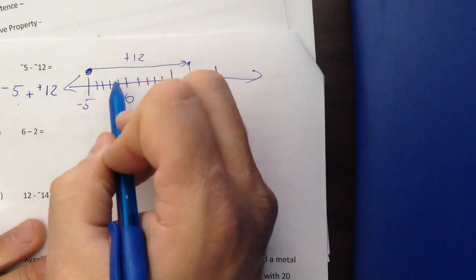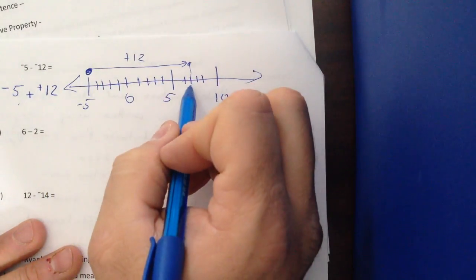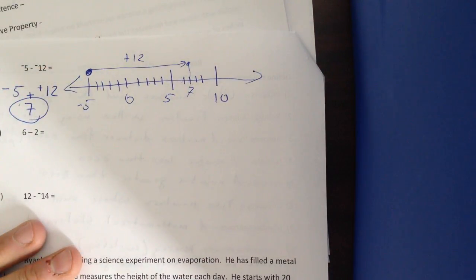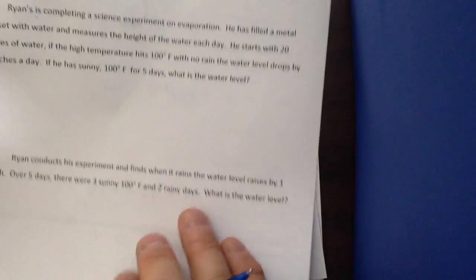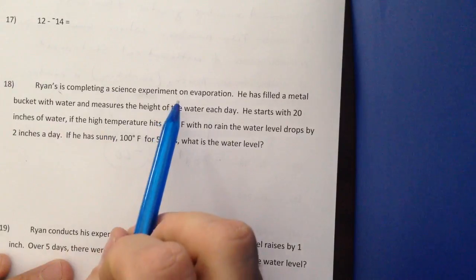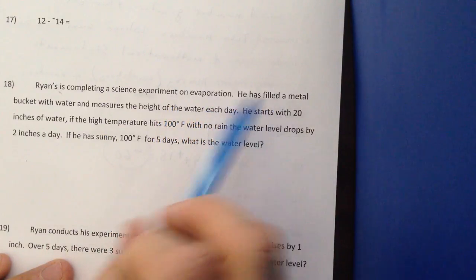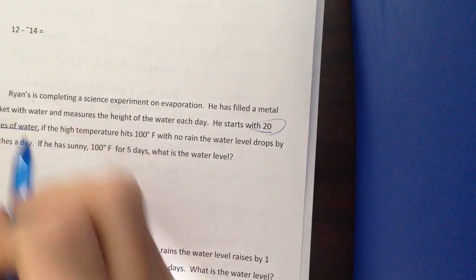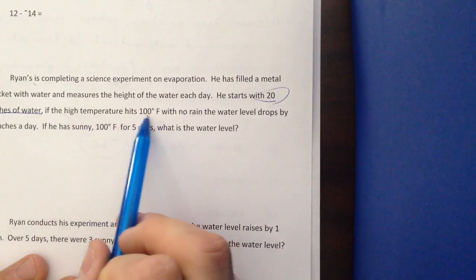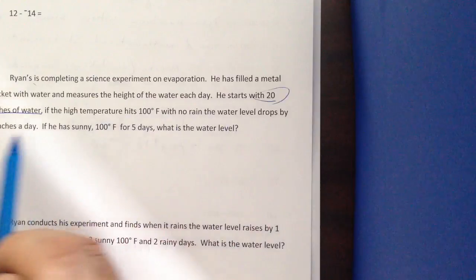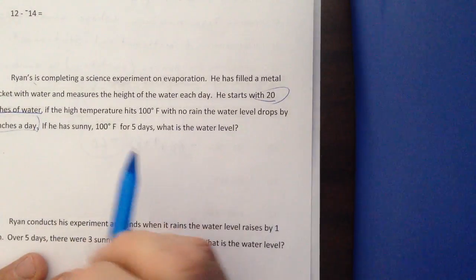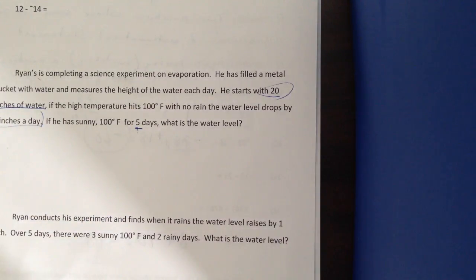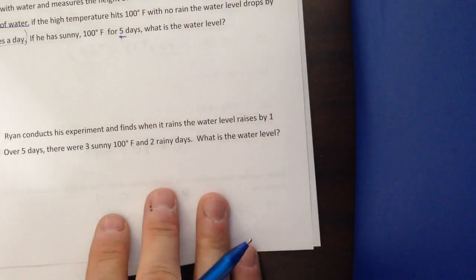Plus 12, or some students use, you know, hopping from number to number. But I end at 7. Positive sense. There's my answer. So working on those. This problem. Brian is completing a science experiment on evaporation. He has a metal bucket with water and measures the height of the water each day. He starts with 20 inches of water. That's kind of important, 20 inches of water. And a high temperature hits 100 degrees Fahrenheit, and there's no rain. The water level drops by 2 inches a day. So after 5 days, what's the water level? You know, it drops 2 inches each day. 5 days should be easy enough to figure out.